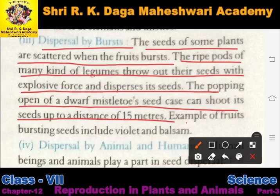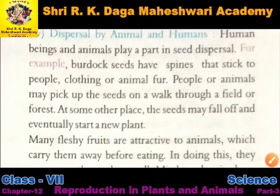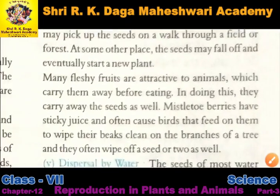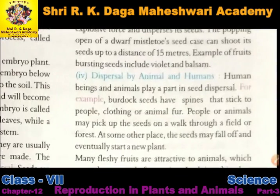Examples of such fruits are violet and balsam — ye us tarike ke fruits hain jo bursting ki help se seeds ka dispersal karte hain.